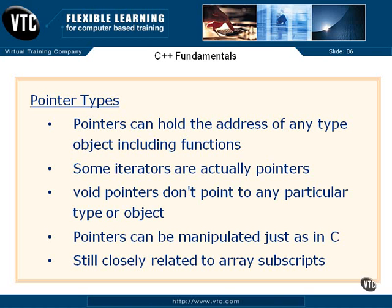The smallest thing that a pointer can point to is still a character — it can't get any lower than that. Pointers can still be manipulated: you can increment them, decrement them, add a value to them, and they will increment or decrement depending on the size of the object that they point to. All that manipulation is just the same as it was in C.